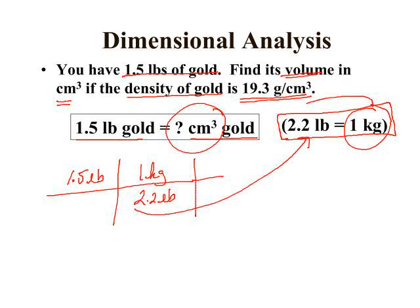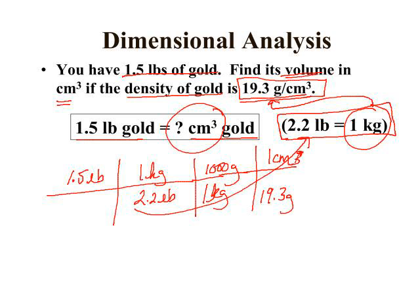Then if you can link that mass to grams so one kilogram is a thousand grams, and then looking at our density, 19.3 grams is equivalent to one cubic centimeter.